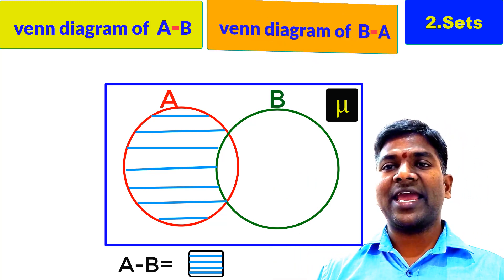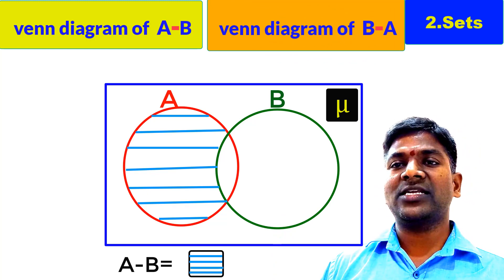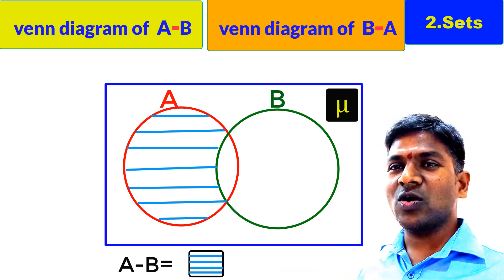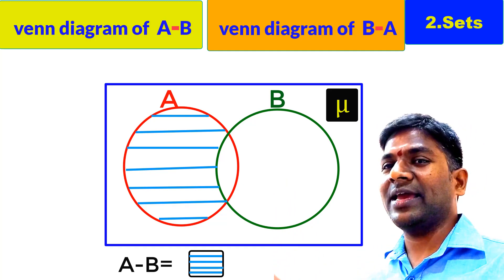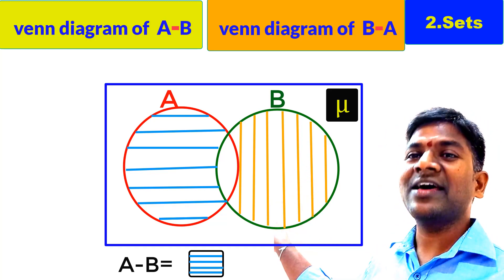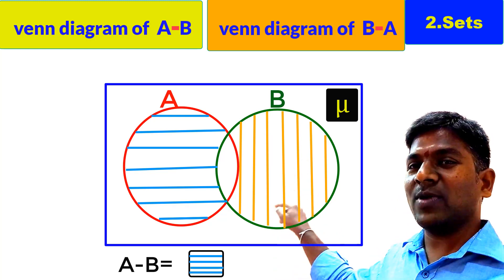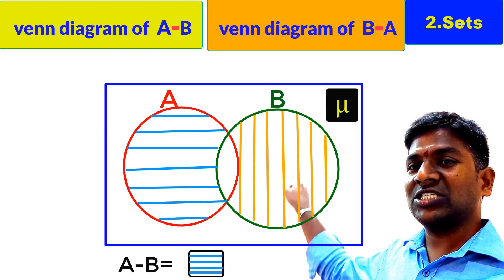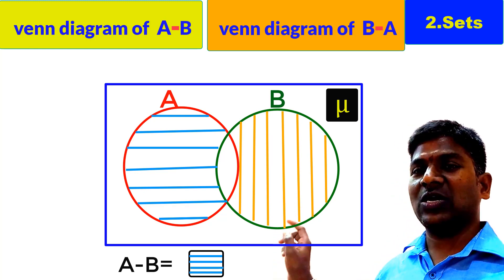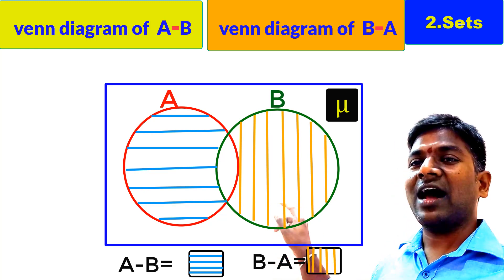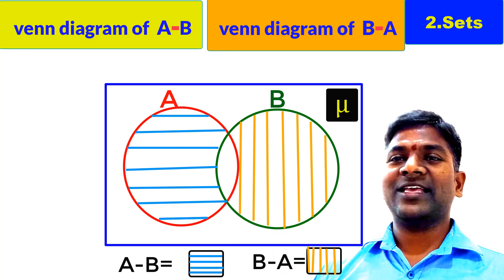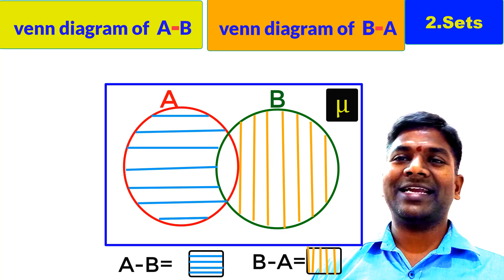Similarly, B minus A can also be shown on the same diagram. B minus A means the elements belonging only to set B. So the area belonging only to set B is shaded as shown on the screen. The elements in this shaded region are the elements of B minus A. In B minus A we draw vertical shaded lines, while in A minus B we draw horizontal shaded lines. So B minus A is represented by vertical shaded lines. This is the representation of Venn diagrams of union, intersection, and difference of sets.